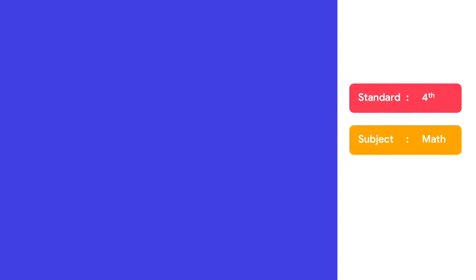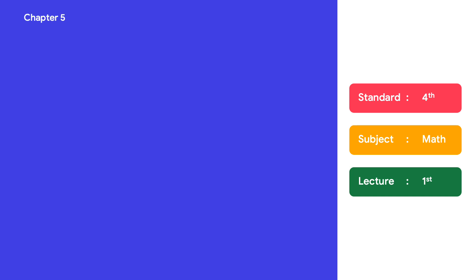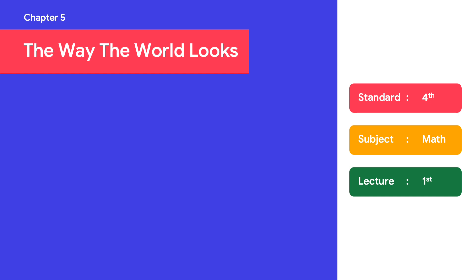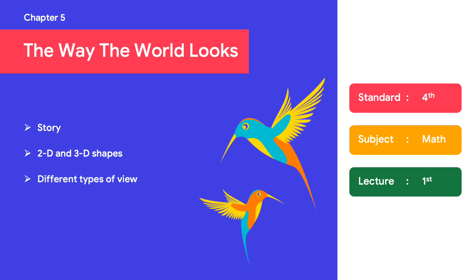Hello everyone, good morning! Welcome to today's first lecture of Chapter 5. The name of our chapter is 'The Way the World Looks.' We will start this chapter with a small story, then revise previous knowledge from third standard about two-dimensional and three-dimensional shapes and the different types of views.